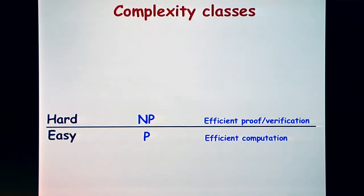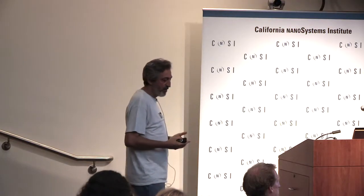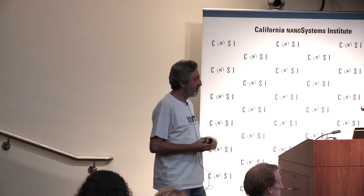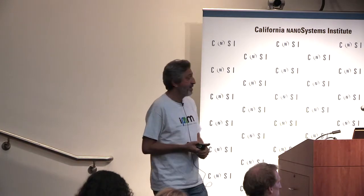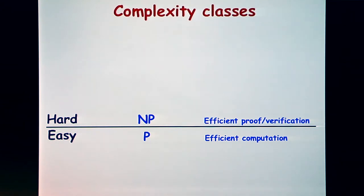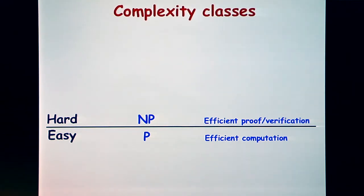To get everybody on the same complexity page: in computational complexity, we study problems according to how difficult they are to compute. There's a separating barrier between things we can actually do efficiently — solving in polynomial time — and what we call hard, which are problems complete for NP and above. The determinant sits very low in the easy functions, and the permanent is very high in the hard functions.